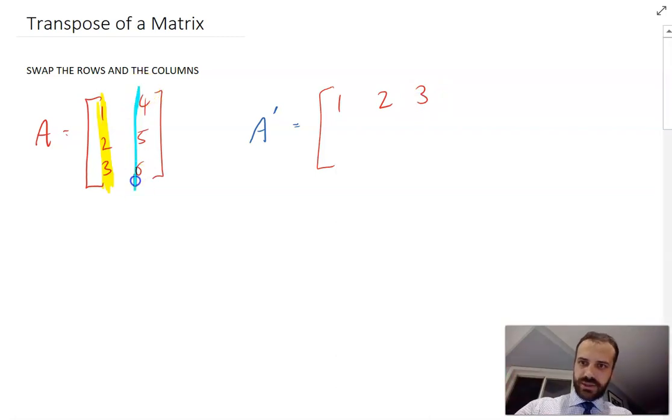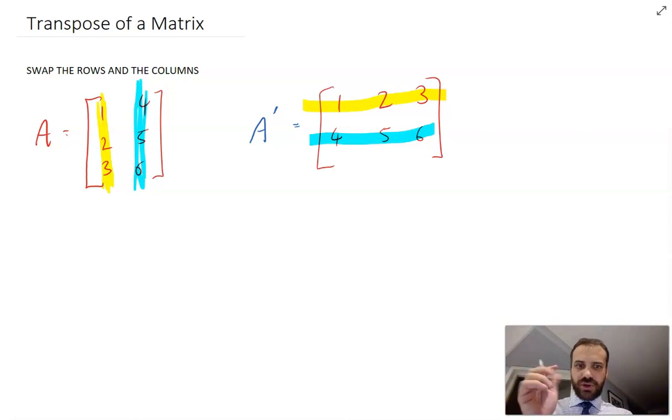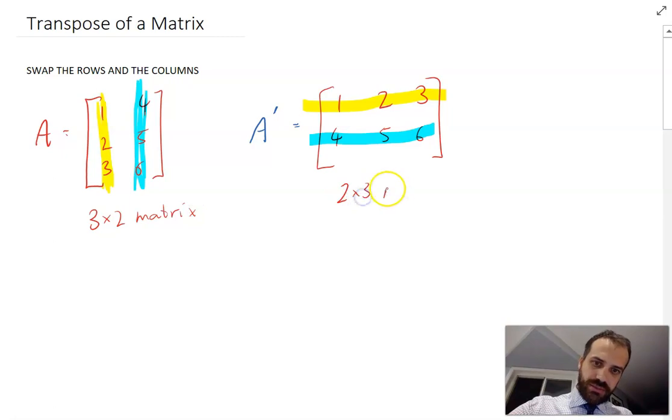And then take our second column and write it in our new matrix as the second row. So you can see this corresponds with that, this corresponds with that. So when we find the transpose, the rows and the columns swap, also the order swaps. So this has gone from being a 3 by 2 matrix to a 2 by 3 matrix.